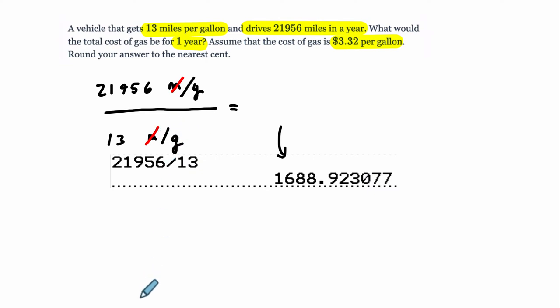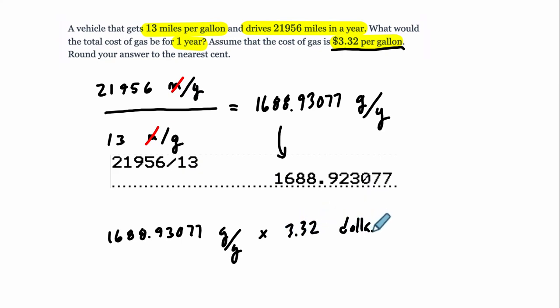So this tells me that each year we'll need that many gallons per year. And the way the units cancel out is miles divided by miles cancel, and the gallons move up to the top. Because when you're dividing by a fraction, you might remember that you flip it and multiply. But what that means is you've got 1688.923077 gallons per year. And I also know that it's this amount, gallons per year, and I know the cost per gallon.